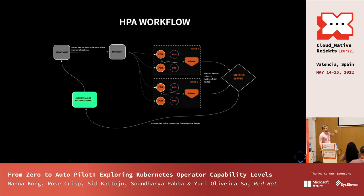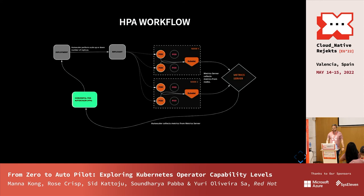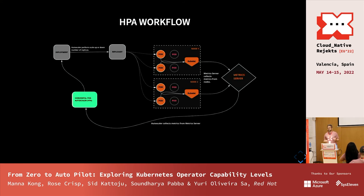The HPA workflow: the CR deploys our deployment, which deploys a replica set and pods. The pods communicate with the kubelet, where cAdvisor runs. The metrics server collects metrics from the kubelet, and the Horizontal Pod Autoscaler reads those metrics from the metrics server and acts. In our demo we show an HPA performing action based on CPU utilization.